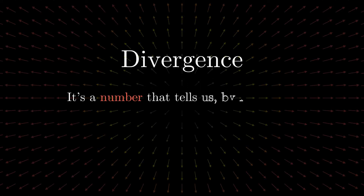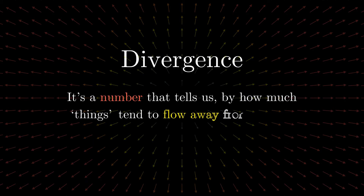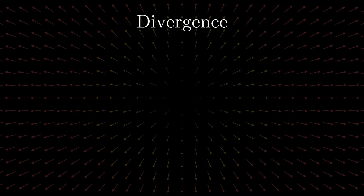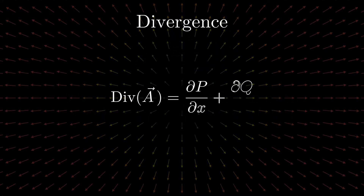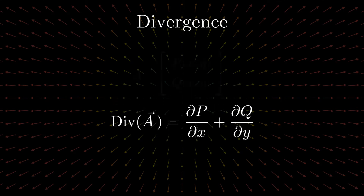Divergence is a number that tells us by how much things tend to flow away from a point. Note that I have used the word 'things'. I want to emphasize the fact that though divergence is particularly understood in regards with fluid flow, it can be used in numerous places where there is no actual flow of physical particles. We calculate divergence with these two terms: partial of p with respect to x and partial of q with respect to y, where p and q are the x and y components of a two-dimensional vector field.